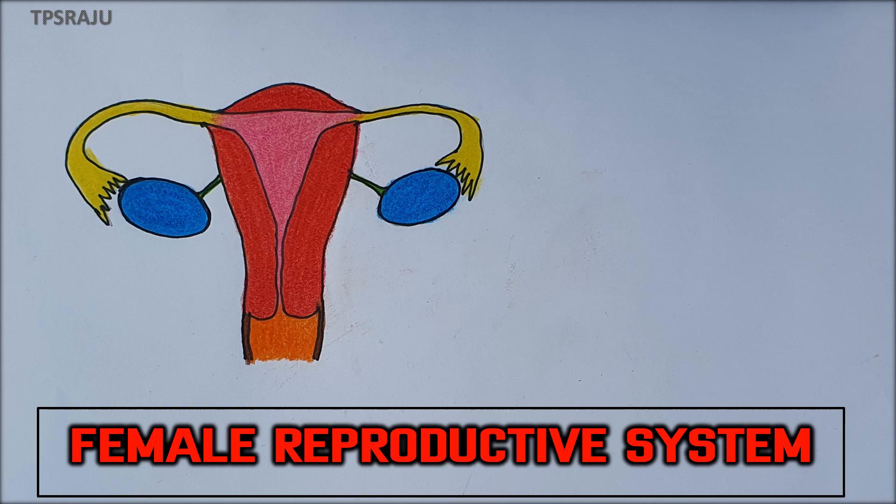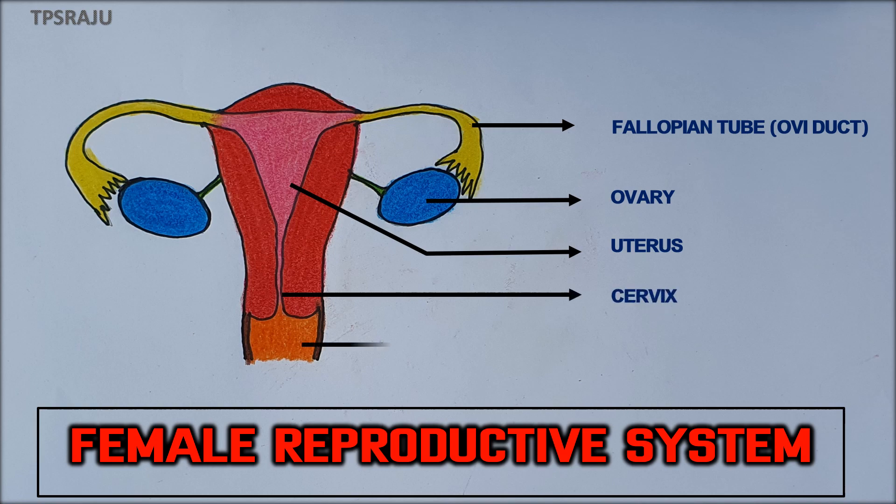Finally, let's label the parts: fallopian tube, fallopian tube, ovary, uterus, cervix, vagina.